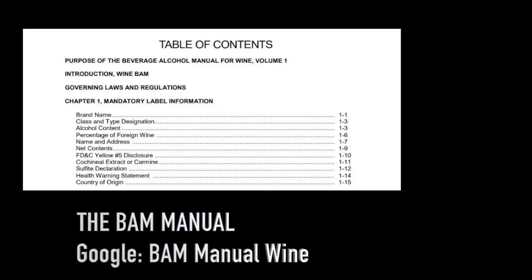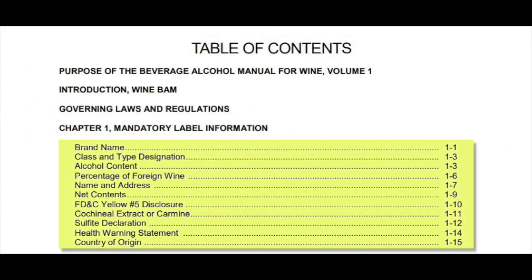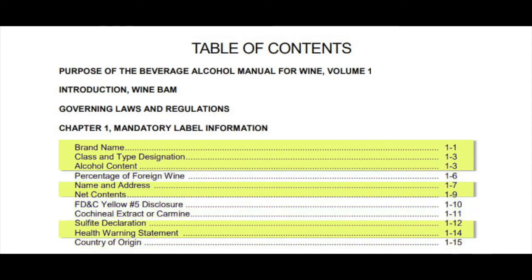Here is where you'll find their summary in the BAM manual. If you look at the table of contents page shown here, you'll see it lists the 11 required items which are covered in chapter 1. We will review seven of the items most commonly used by US wineries for domestic wines.